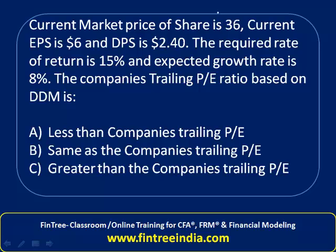Current market price of a share is 36, EPS is 6, DPS is 2.40, required rate of return is 15%, and growth rate is 8%. The question asks whether the company's trailing price-to-earnings ratio based on DDM is less than, equal to, or greater than the trailing price-to-earnings ratio. So how do you calculate the trailing price-to-earnings ratio?